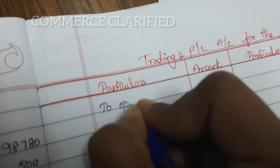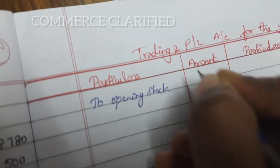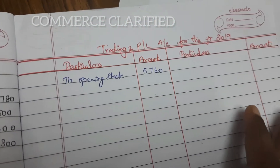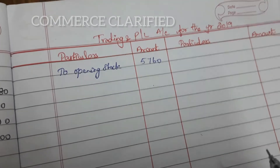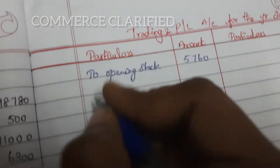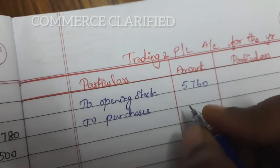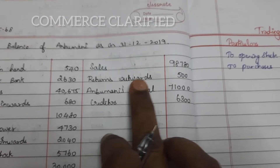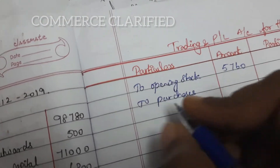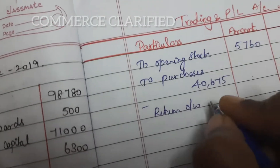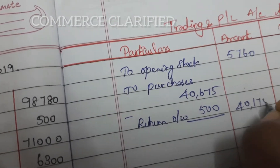Now let's work out the sum. On the debit side of the trading account: Opening stock is rupees 5,760. Next, purchases — return outwards (purchase returns) are 500, so inner column shows purchases 40,675 minus return outwards 500, giving outer column 40,175.